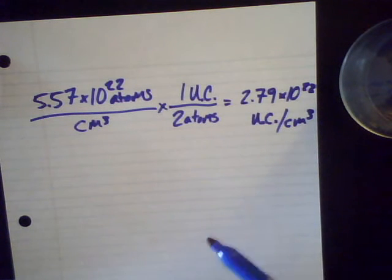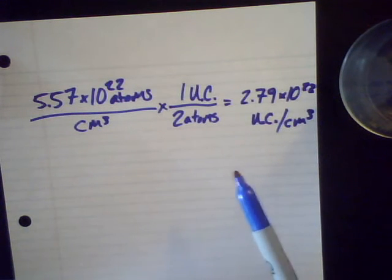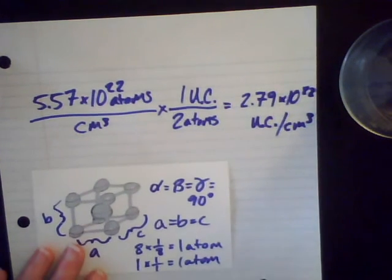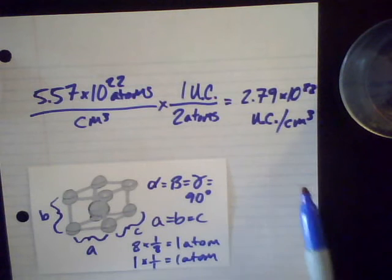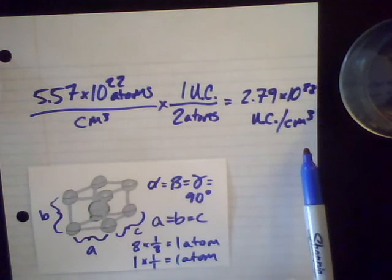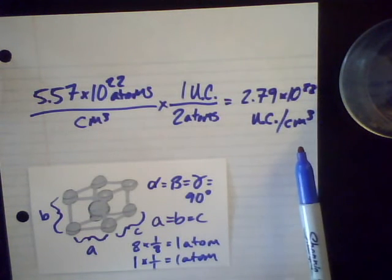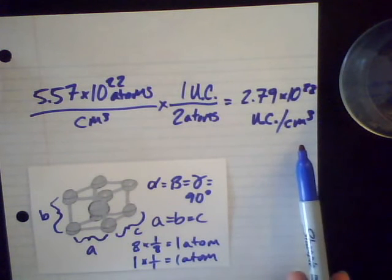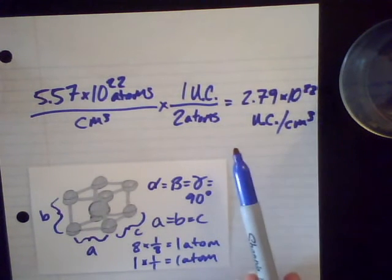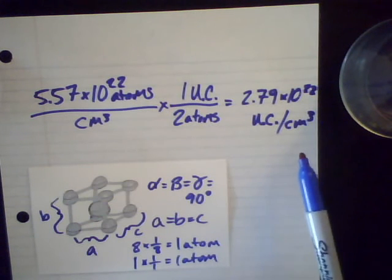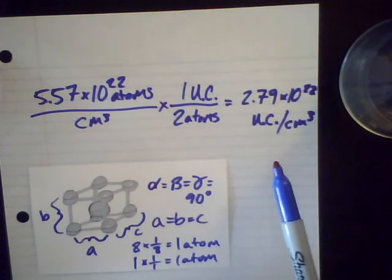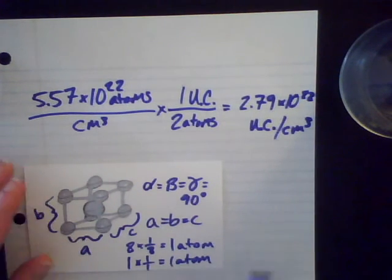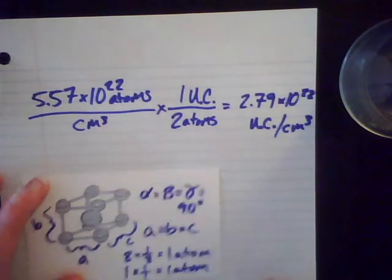All right, now here's the tricky bit. I'm trying to get to an edge length. I'm trying to figure out how long the edge is for this unit cell. Right now I have the number of unit cells per centimeter cubed, but I need to figure out the volume of this unit cell. So that's the number of centimeters cubed per unit cell. So I need to flip this thing. So if I take the inverse of this number, then that will give me what I'm looking for. That will give me the volume of one unit cell.